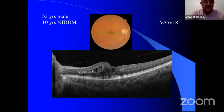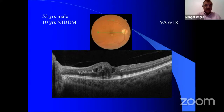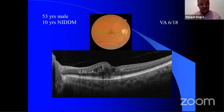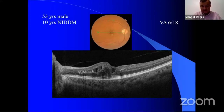Anirudh has presented a great case. From the point of view of a comprehensive ophthalmologist, I'm going to be very basic, as he has discussed most of the points. We have here a 53-year-old male with irregular treatment, 10 years diabetic, and 6/18 vision in the right eye. He has described all the features.